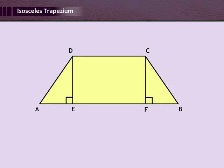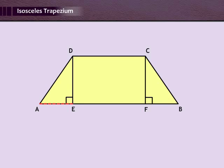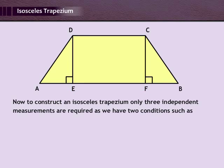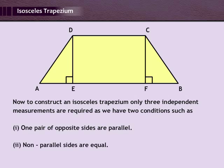Now we will learn about the construction and area of an isosceles trapezium. In an isosceles trapezium ABCD, the non-parallel sides are equal: AD equals BC. Also angle A equals angle B, and angle ADC equals angle BCD. Diagonals are equal in length: AC equals BD. AE equals BF, since DE is perpendicular to AB and CF is perpendicular to BA. To construct an isosceles trapezium, only three independent measurements are required, as one pair of opposite sides are parallel and the non-parallel sides are equal.